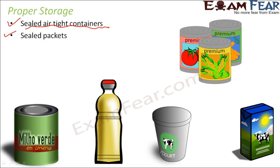Even items stored in packets — such as milk and many vegetables — are properly sealed so that the packets are airtight, preventing microbial contamination.